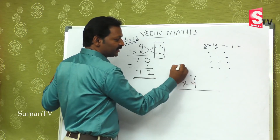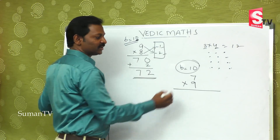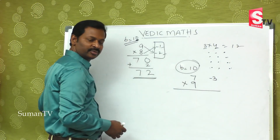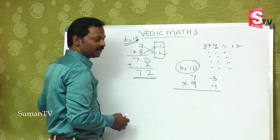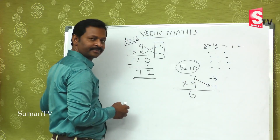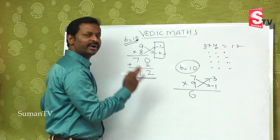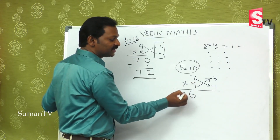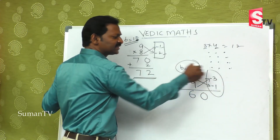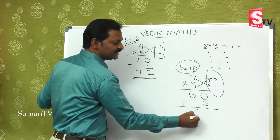Let's verify with another example. Seven is close to ten, so ten minus three — write minus three. Nine is close to ten, so write minus one. Seven minus one is six — that is the first part. For the second part, we put zero because the base is ten, and minus into minus is plus, so three ones are three. The answer is sixty-three.